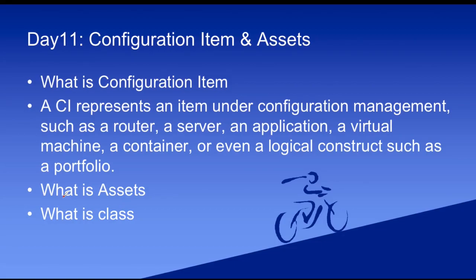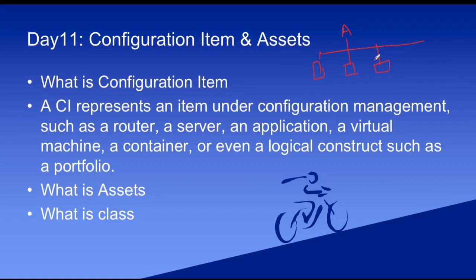First we have to understand what is the configuration item. A configuration item is nothing but tangible and intangible data. For example, if you are working for an organization, there are many things present — server, it may be physical or maybe logical, IP address, and then we have software. These all are tangible and intangible data, or these might be touchable or might not be touchable. For example, software we cannot touch, but it's actually an application. Similarly, we have a server — either it could be a virtual server, a VM, or a physical server. This is all we call a configuration item.